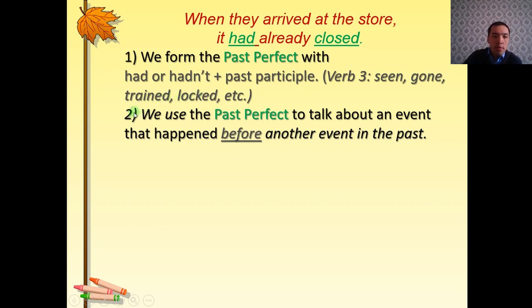The definition of the past perfect: We use the past perfect to talk about an event that happened before another event in the past.